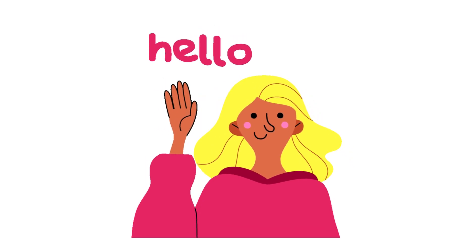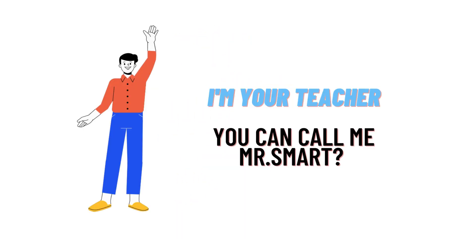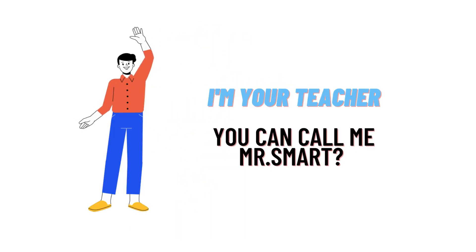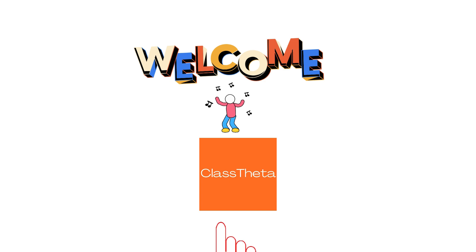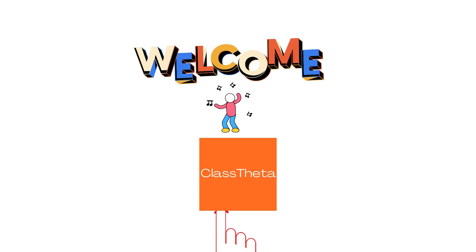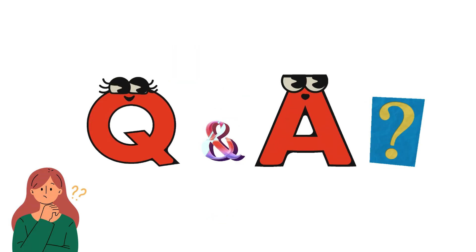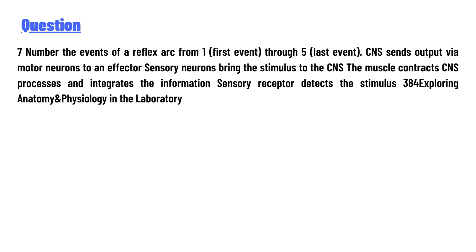Hello everyone, how are you? I am your teacher here and I will teach you different questions and their answers. Welcome to class. Today's question is number seven: the events of a reflex arc from the first event through the fifth last event.